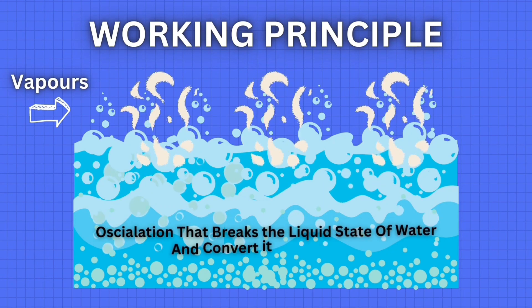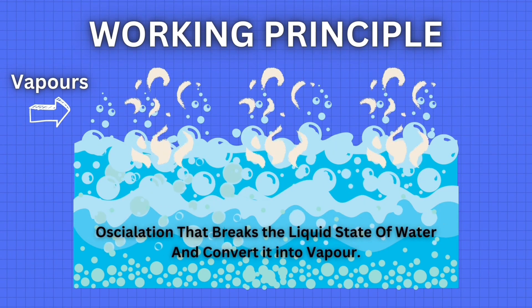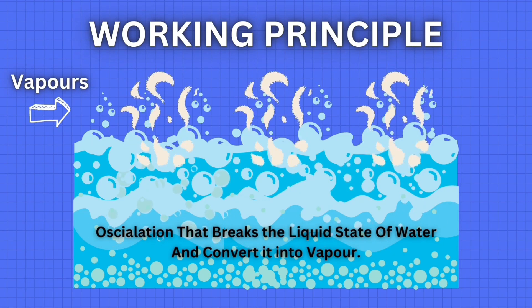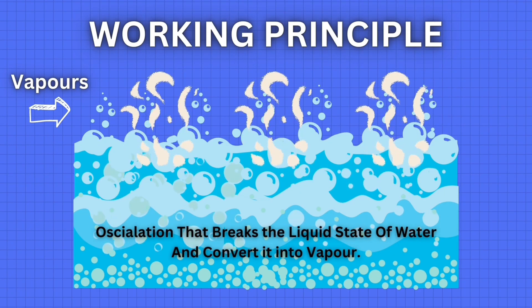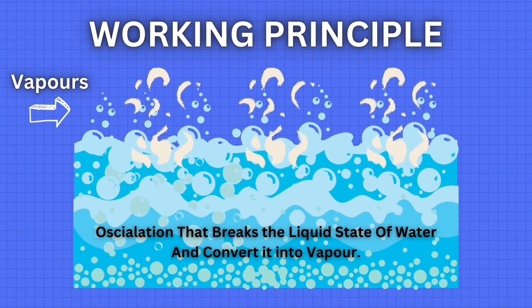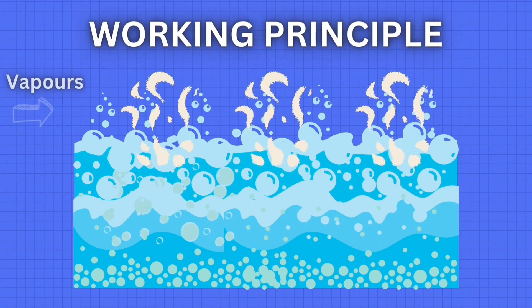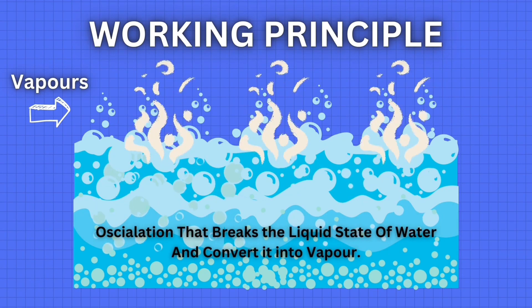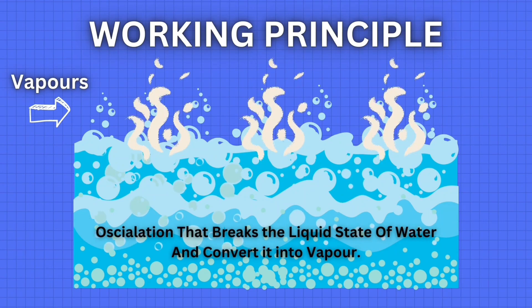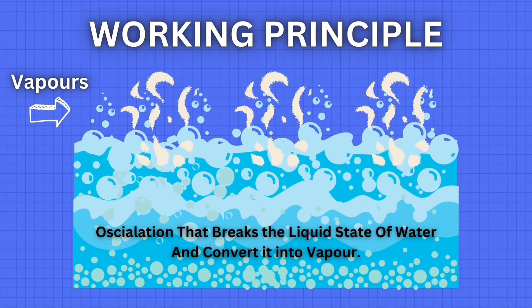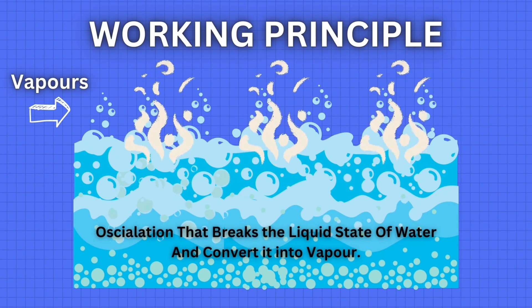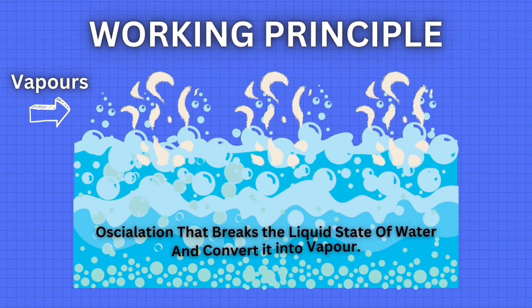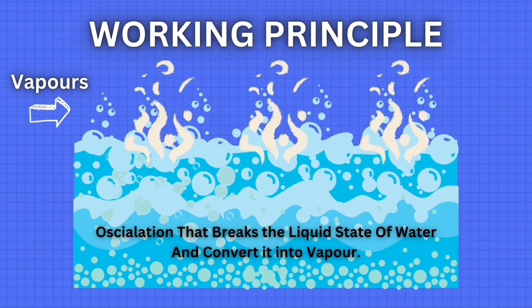Now if we put that vibrating piezoelectric material inside a water body, the sound waves produce rarefaction and compression, due to which an extremely rapid movement inside the water body can be seen. Because of this, the droplets can no longer sustain their liquid state and are converted into vapor immediately. When the water oscillation limit is exceeded, the water starts to become vaporized. This is the working principle of a humidifier circuit.